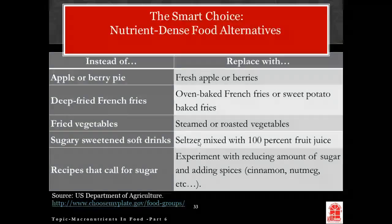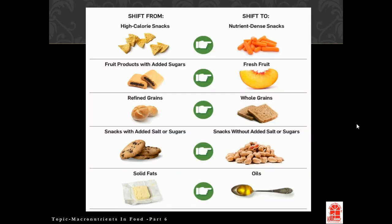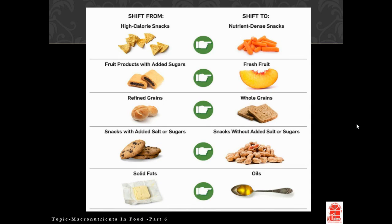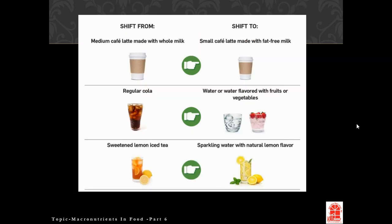Seltzer is basically water carbonated with added carbon dioxide — we call it soda here. If you mix it with 100% fruit juice, you can satisfy that need for fizzy drinks. There are other interesting shifts from high-calorie snacks to nutrient-dense snacks. Fruit products with added sugars — like fruit loops — seem fruity but are just processed versions. You can look at all the different processed foods in your house and see what you can substitute to get more nutrients instead.